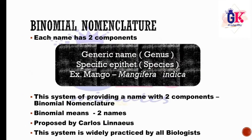The widely accepted system is called Binomial Nomenclature. The father of Binomial Nomenclature is Carlos Linnaeus. In the Binomial System of Nomenclature, there are two names — two parts to one scientific name: the generic part (Genus) and the specific epithet (Species name). One example is Mango — scientific name Mangifera indica. Mangifera is the genus and indica is the species. All biologists accept this system.